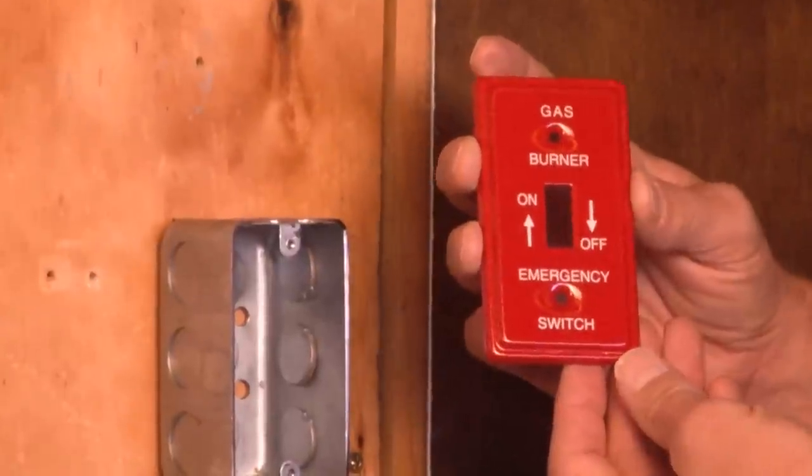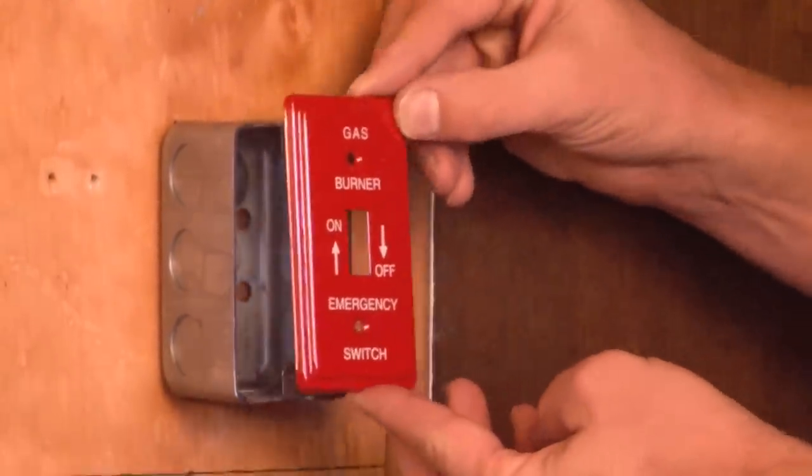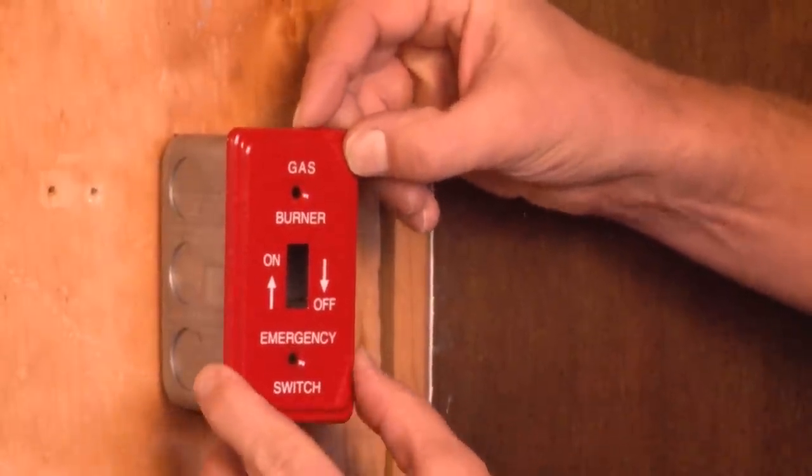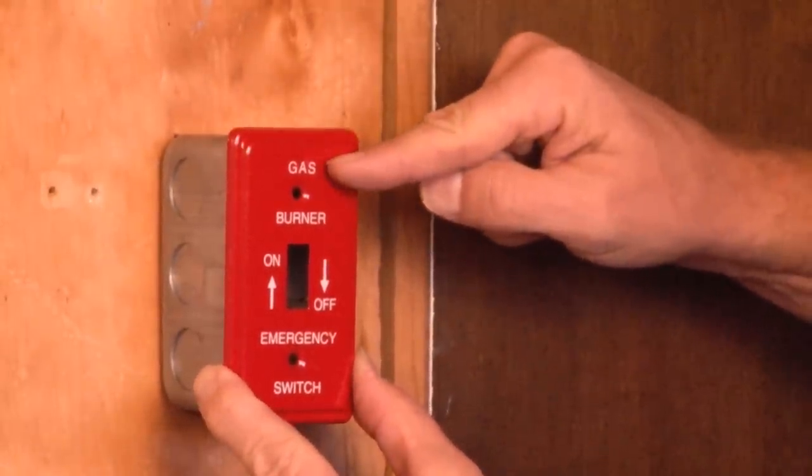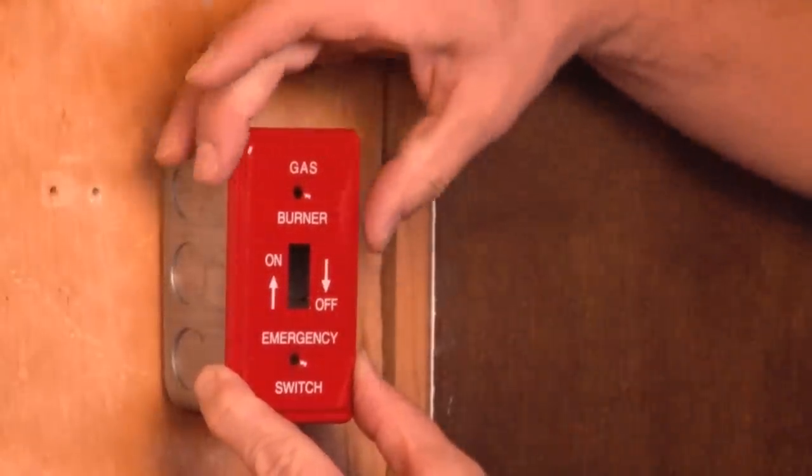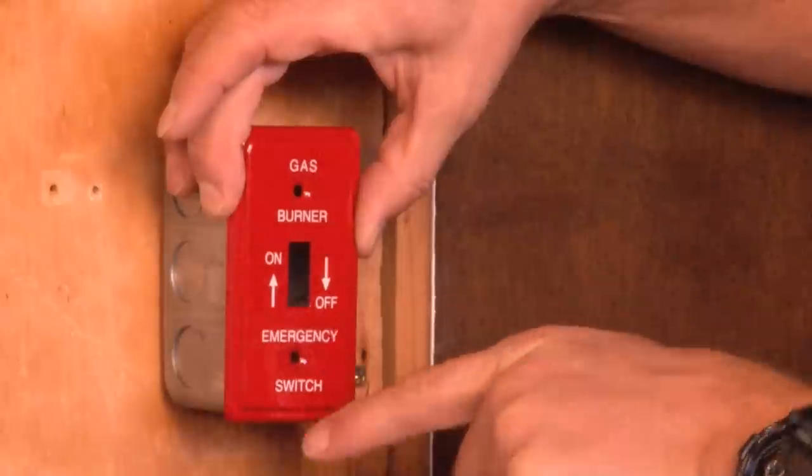Garvin part number BP19350 fits on standard handy boxes and is silk-screened for the type of burner or furnace unit. This is a gas burner. There are on and off directional arrows, and it indicates high-visibility red is an emergency switch.